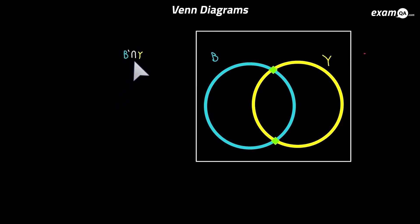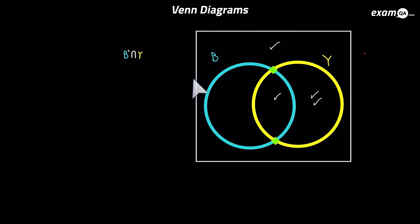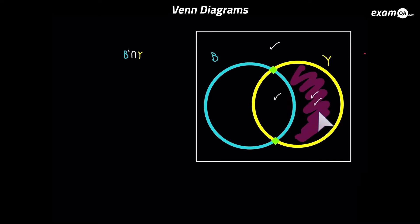Now we're going to look at some very difficult ones — a lot of people find these hard, including some A-level students. It wants 'not B and Y'. What I do is go around ticking every place where it's not B — so I tick the outside, and in the Y region. Then I tick where it's Y. Going back to the question, it wants 'not B AND Y', meaning both at the same time. So which region is double-ticked? That's the region we're looking for.